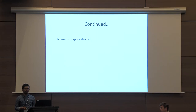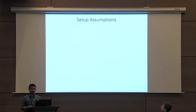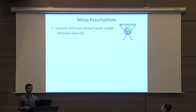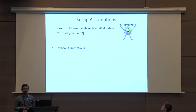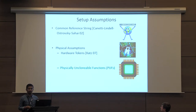Unfortunately, it is impossible to construct UC Secure Computation without a trusted setup assumption. The setup assumptions commonly used in cryptography include the common reference string model, in which general feasibility results were shown starting with the work of Canetti and others. Other kinds are trusted physical assumptions, one of which is hardware tokens, studied extensively starting with the work of Katz. The focus of our work will be physically unclonable functions, or PUFs in short.